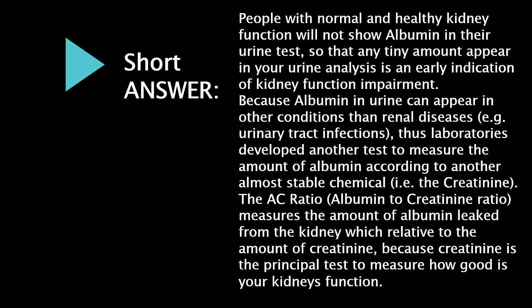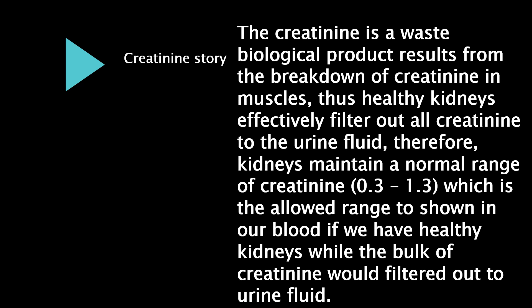The ACR (albumin to creatinine ratio) measures the amount of albumin leaked from the kidney relative to the amount of creatinine, because creatinine is the principal test to measure how well your kidneys function. Creatinine is a waste biological product resulting from the breakdown of creatine in muscles. Healthy kidneys effectively filter out creatinine into the urine, maintaining a normal blood range of 0.3 to 1.3, while the bulk of creatinine is filtered out to the urine fluid.